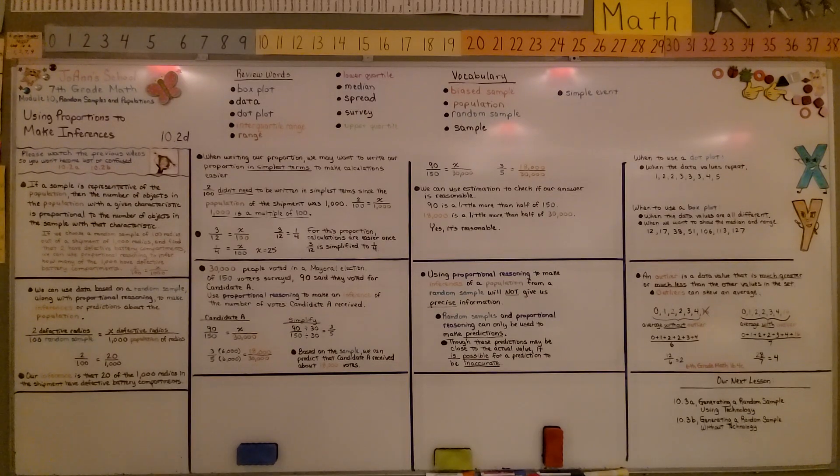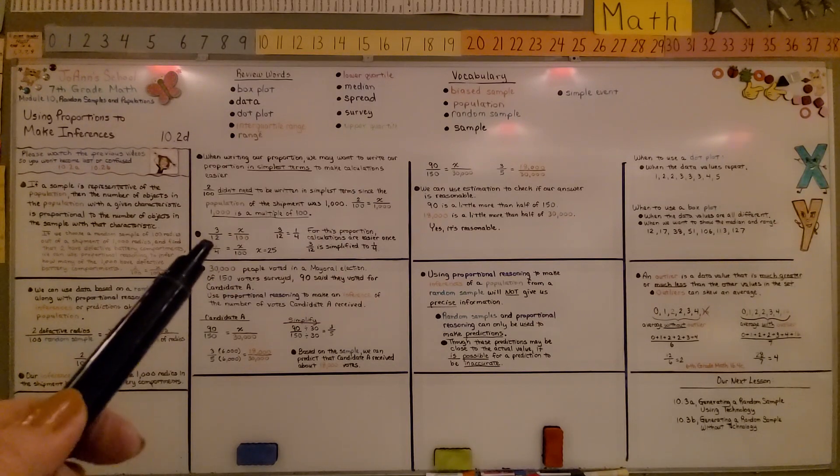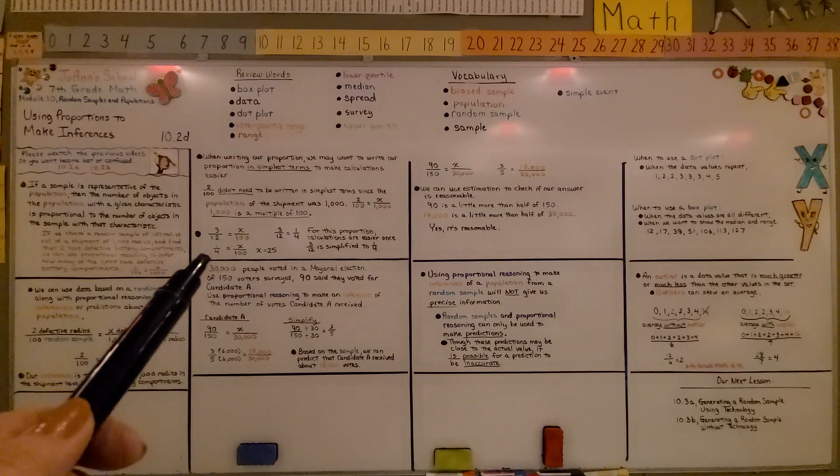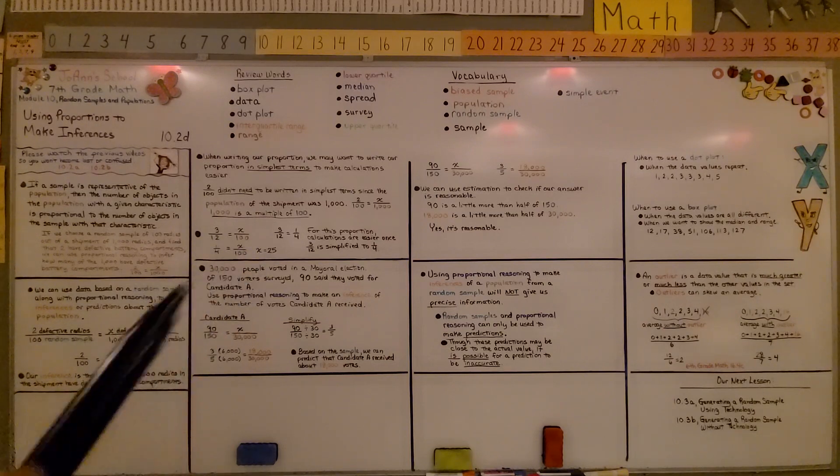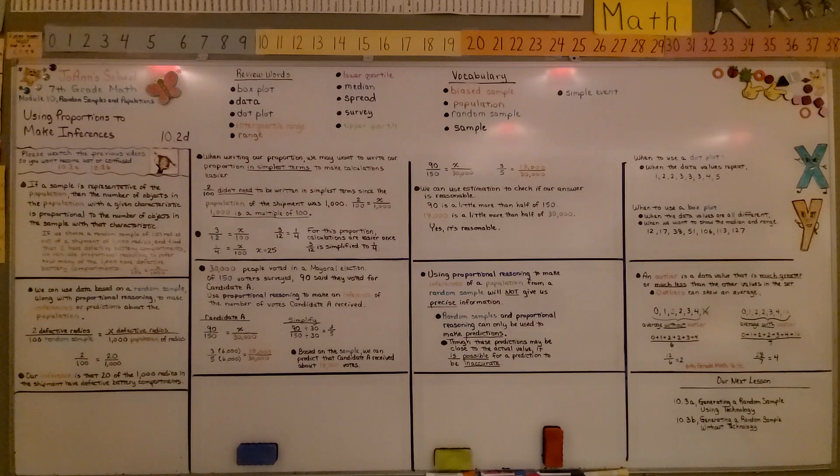Keep in mind, if the random sample and the population, when you're looking at those two numbers, if the population is a multiple of that random sample, you don't need to simplify it. But in some cases, like this 3/12, it might be better to make it 1/4 so that your math is easier to do. The calculations are easier.